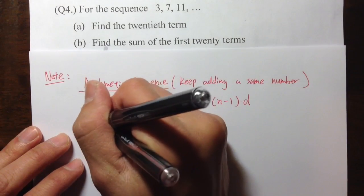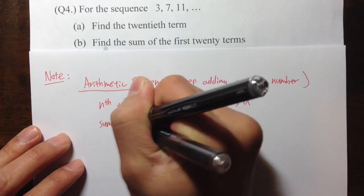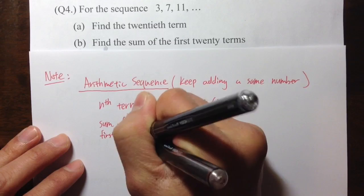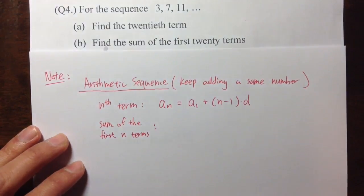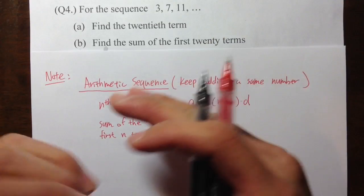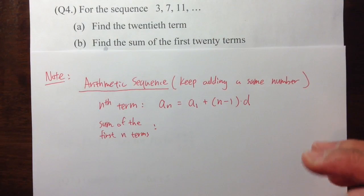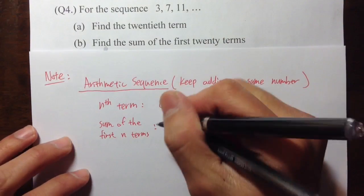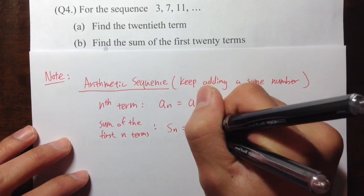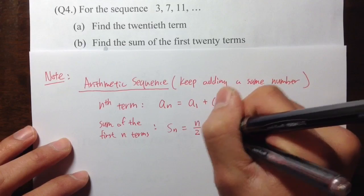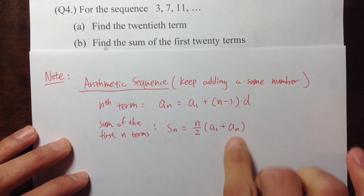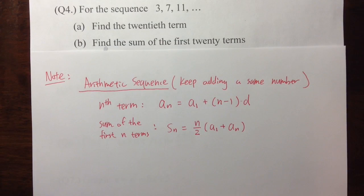We also need to know how to find the sum of the first n terms. Maybe you have a total of 20 terms and want to find what's the sum of all the numbers. In that case, use the formula: S_n equals n over 2, times a_1, the first term, plus a_n, the last term.